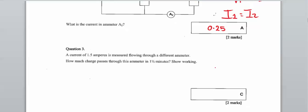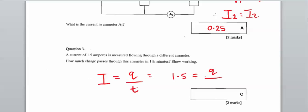A current of 1.5 amperes is measured flowing through a different ammeter. How much charge passes through this ammeter in one half minute? We need to use the relationship that current is the rate of charge. So with 1.5 amps over 30 seconds — converting one half minute to 90 seconds — the charge is equal to 90 times 1.5, which is 135 coulombs.